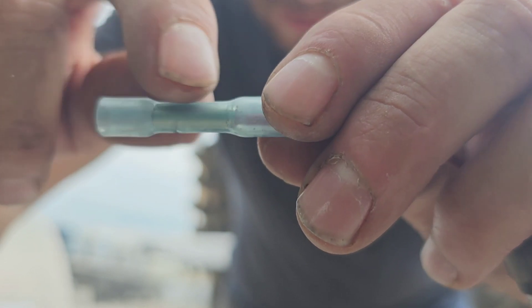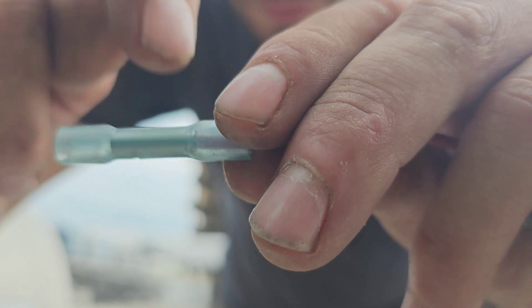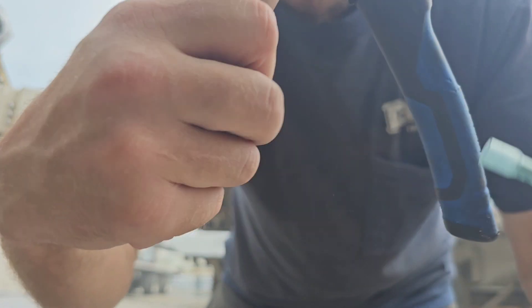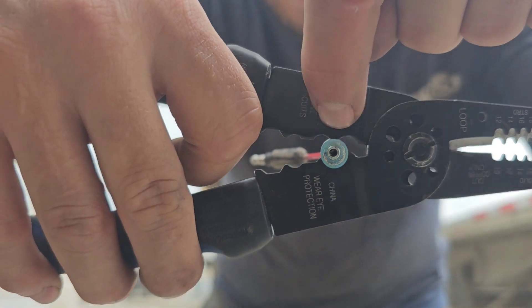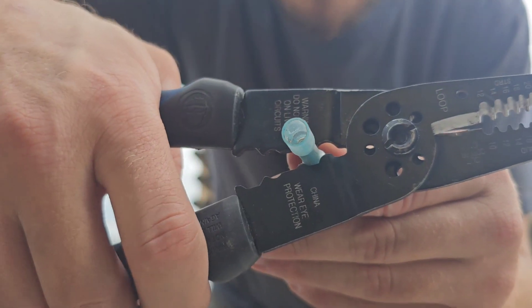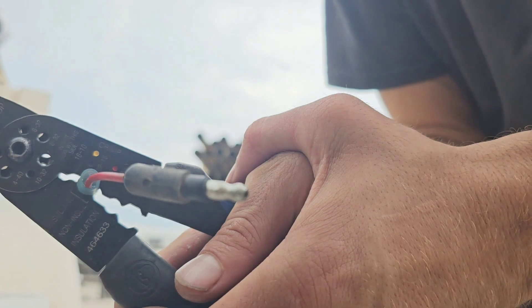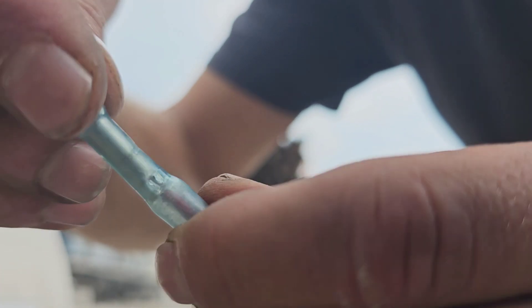Then you're going to take your crimpers here. This is going to push this down, and there's two on this side that are going to push it up. Then you crimp it, and as you can see, it tightens up that circle there - super tight connection.